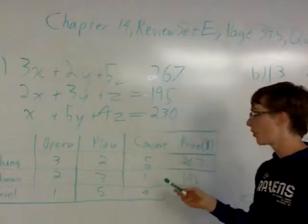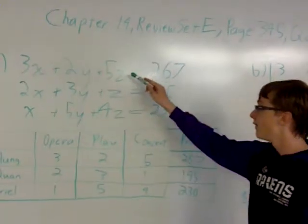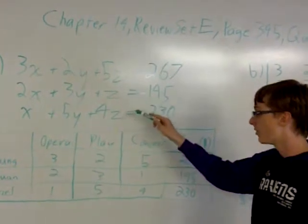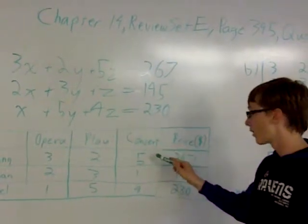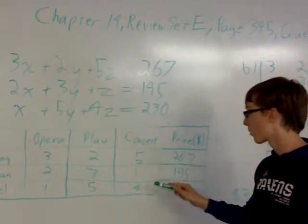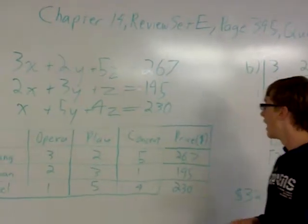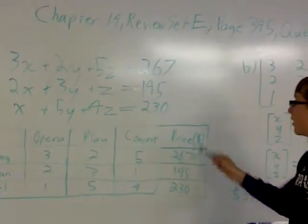And you make the concert the Z variable for 5Z, Z, and 4Z, representing 5 concerts, 1 concert, and 4 concerts. And you put the price over here.